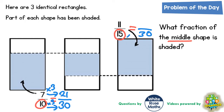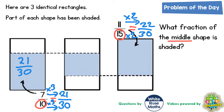To make fifteen into thirty we multiply by two. We do exactly the same to the top — times eleven by two — and eleven times two is twenty-two. So now we've got our equivalent fractions: twenty-one thirtieths is how much of the left-hand rectangle is shaded. It's a good idea to write that on the rectangle — it might help us to visualise what's going on. On the right-hand rectangle we've got twenty-two thirtieths being shaded.